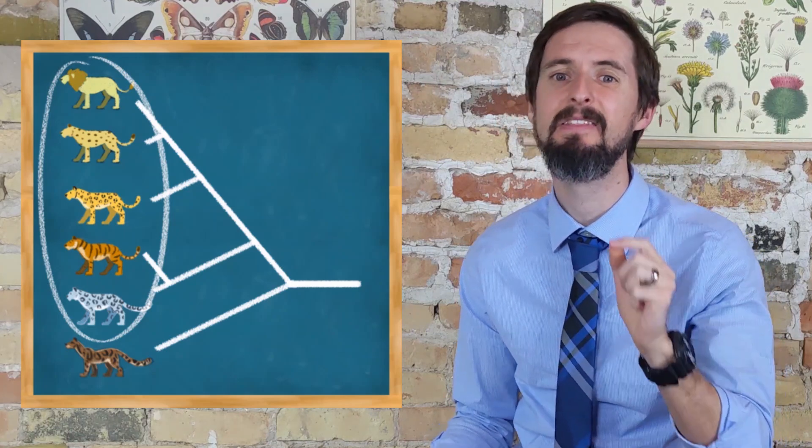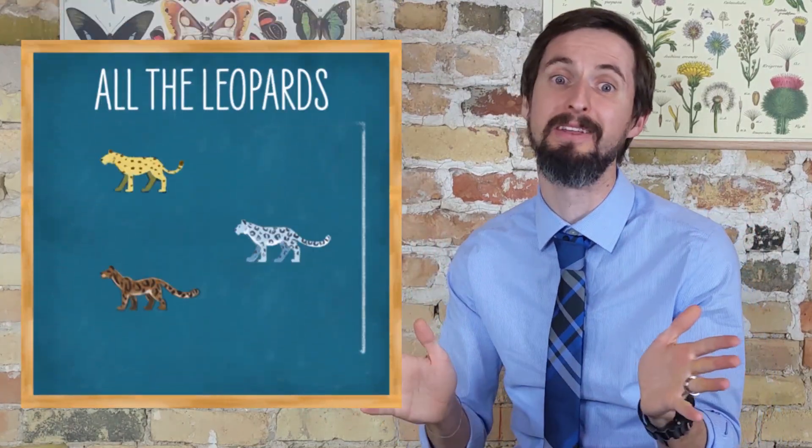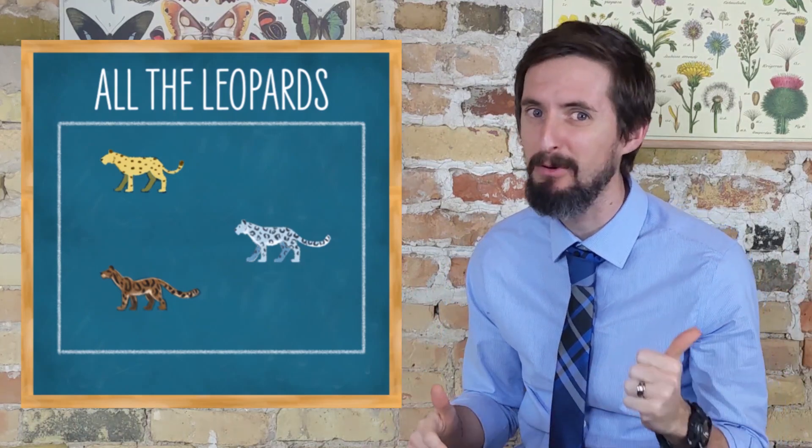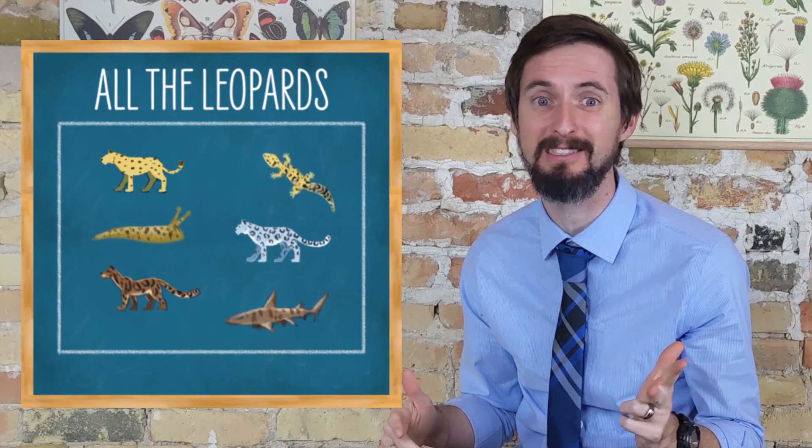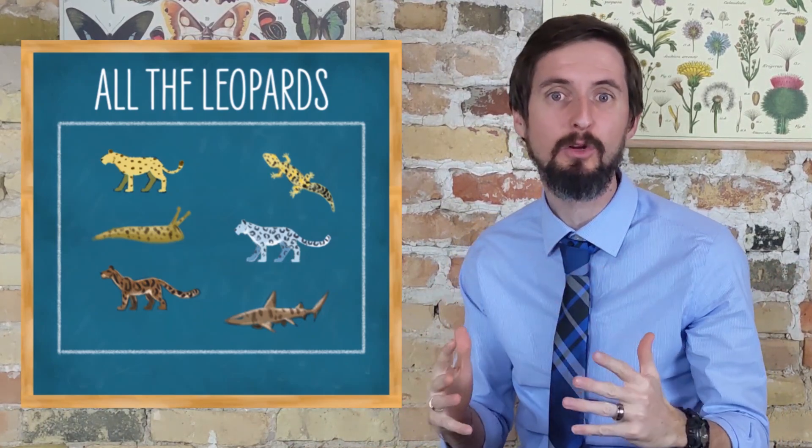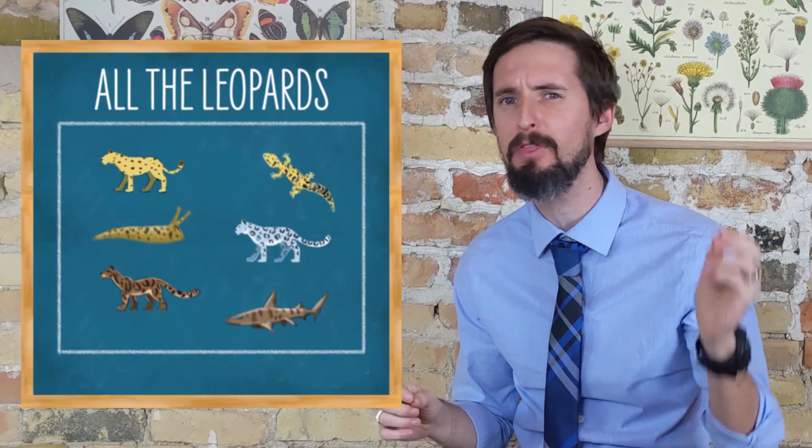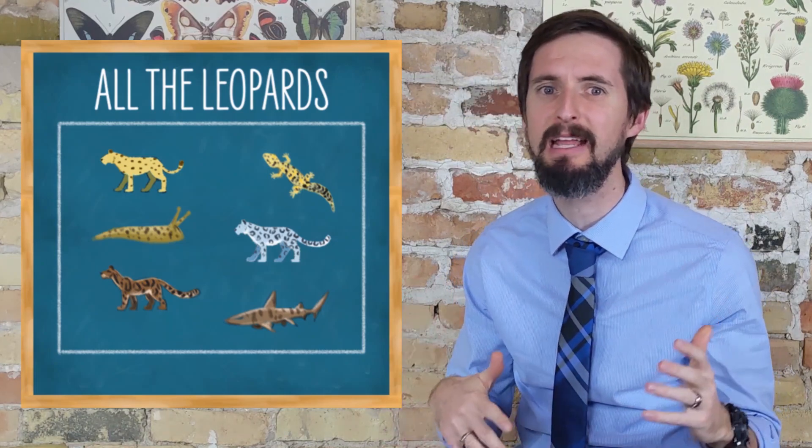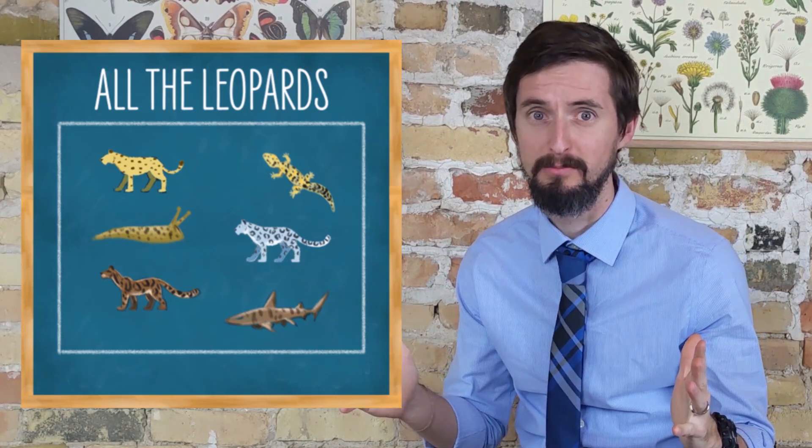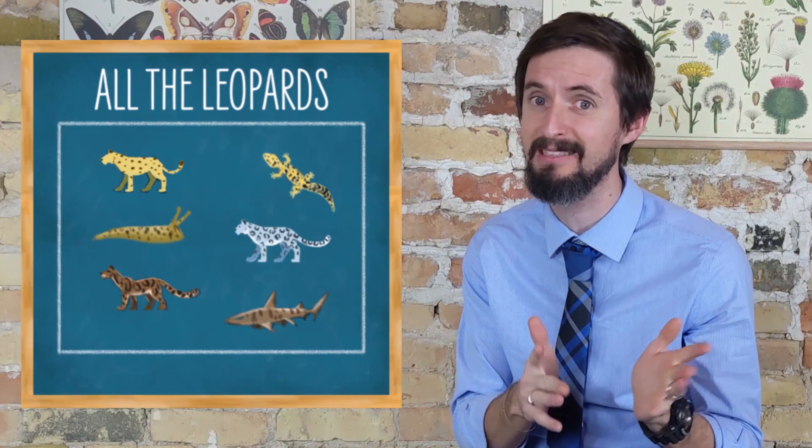If I wanted to create a group called all the leopards, I could. I would just put leopards, snow leopards, and clouded leopards into a box. I could probably add leopard sharks, leopard geckos, and leopard slugs to the box as well. Why not? And this would be a fine way of organizing animals so that I could quickly find anything with leopard in its name. Of course, I had to know that about them before I could ever put them in the box, so it didn't teach me anything about these animals that I didn't know before I put them in the box. This group, all the leopards, that excludes many species that are actually more closely related to the leopards in the box than the leopards in the box are to one another, is not a monophyletic group.